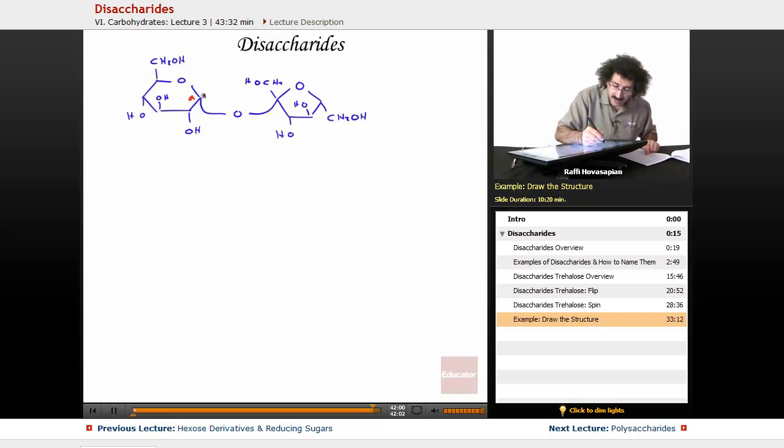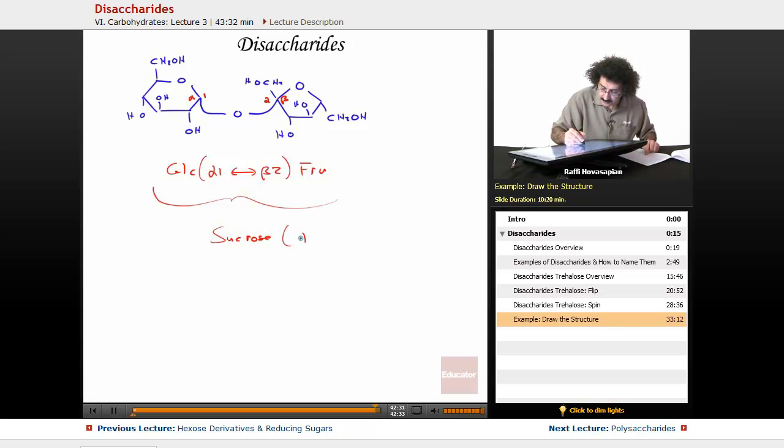Now I have my alpha one configuration, alpha one carbon on my glucose. This is my beta two. You can write beta two, two beta. It doesn't matter the order, as long as the alpha one is on the left of the arrow. Okay, so we have GLC, alpha one, double arrow, beta two, FRU. This is sucrose. This is table sugar.